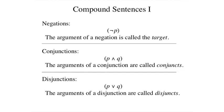A negation consists of the negation operator followed by a simple or compound sentence, all enclosed in parentheses. For example, given the sentence p, we can form the negation of p as shown here. The argument of a negation is often called the target of the negation.